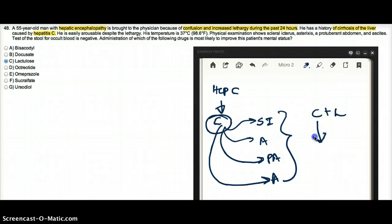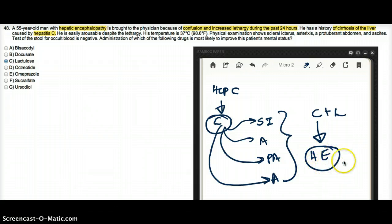Now the confusion part is because of hepatic encephalopathy. Hepatic encephalopathy happens in cirrhosis when there is too much ammonia in the system. Liver is primarily responsible for getting rid of ammonia from our body. So if there is cirrhosis of the liver then the ammonia is going to be trapped in our body.